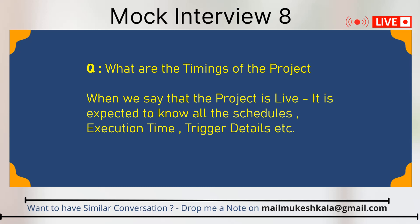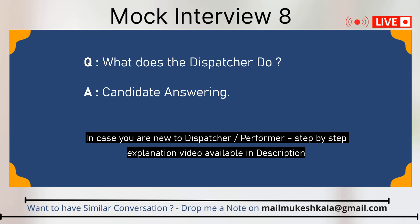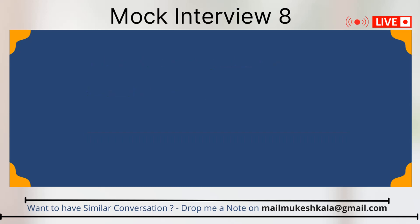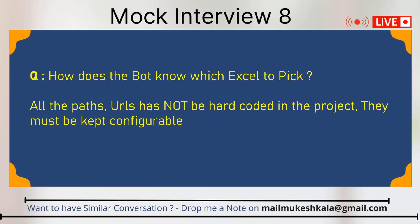The dispatcher starts at 6, loads the data — in the RE Framework it fetches data from get transaction and then processes it in the process stage. When you say Excel, where does the bot get this Excel as input? From the config file. So in the config file you have specified the Excel path. Let's say you have specified the path as D colon data — how do you make sure that every day the correct Excel is available? There would be somebody placing that Excel since it's a daily process — how does your dispatcher know it's the correct Excel file?